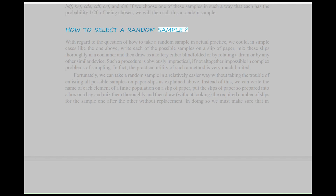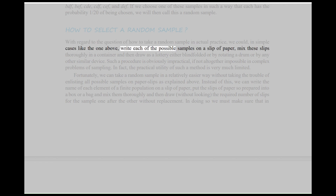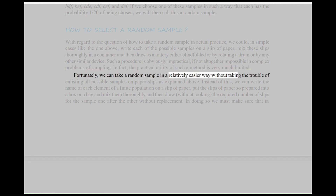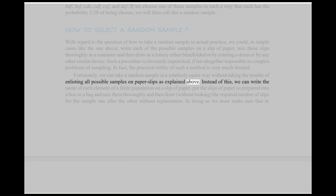How to select a random sample? With regard to how to take a random sample in actual practice, we could, in simple cases, write each of the possible samples on a slip of paper, mix these slips thoroughly in a container, and then draw as a lottery either blindfolded or by rotating a drum or by any other similar device. Such a procedure is obviously impractical, if not altogether impossible, in complex problems of sampling. In fact, the practical utility of such a method is very much limited. Fortunately, we can take a random sample in a relatively easier way without taking the trouble of enlisting all possible samples on paper slips.